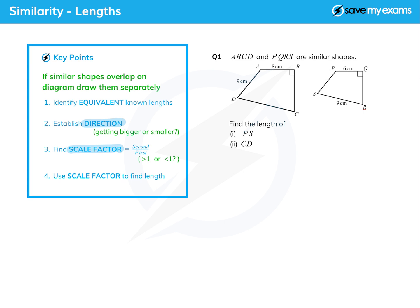How do we find the scale factor though? We take the second known length and put it over the first known length. And then we use that scale factor to find the length that we want by multiplying of course, because it's a scale factor and factors are things that are multiplied.